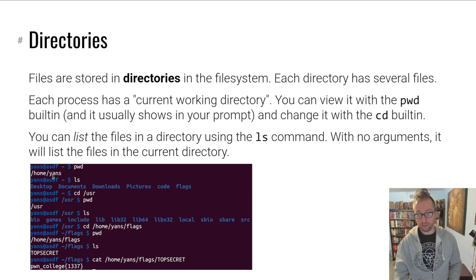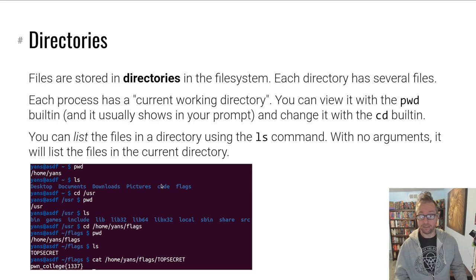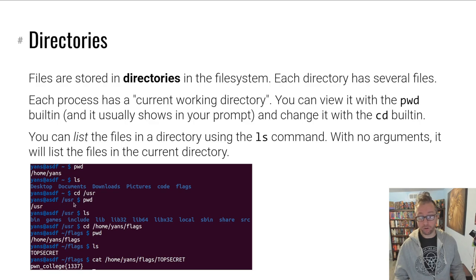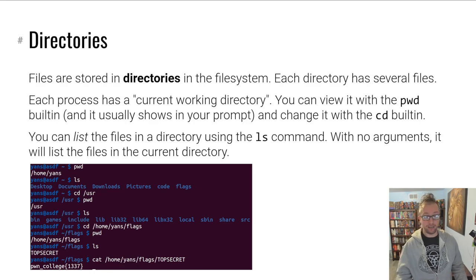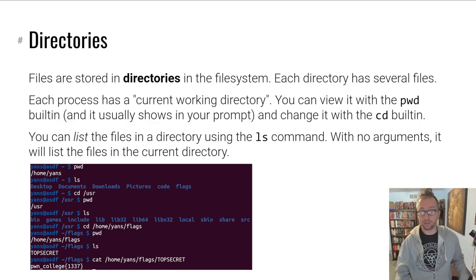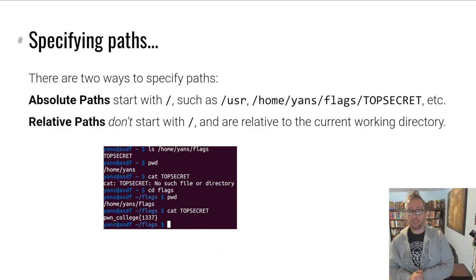For example, /home/yans, as you can see from running pwd. You can list the files in a directory with ls — here are files in my home directory. I can move to another directory and change my current working directory with the cd built-in. When I do cd /usr, my current working directory becomes /usr. I can list that, then go into the flags subdirectory I saw in my home directory — /home/yans/flags — see there's a top secret file, and cat out that top secret file.